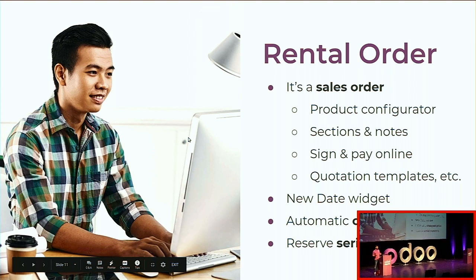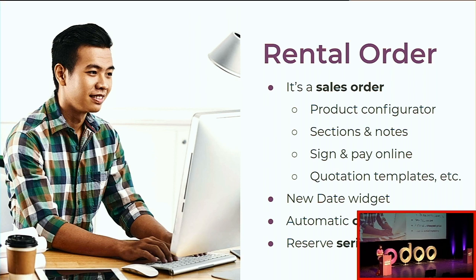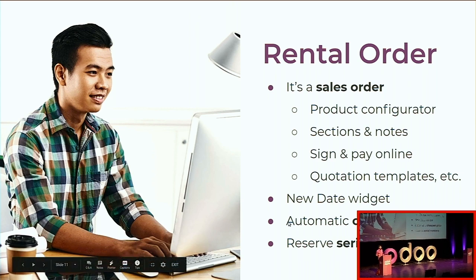The rental order is a sale order — that was a prerequisite for developing this application. We wanted to reuse everything already existing in Odoo. It's exactly the same sale order, with no extra fields. Even in version 13 we still have the product configurator, sections and notes, online sign and pay, and quotation templates. What's new is the new date widget, automatic cheapest price computation, and the ability to reserve with serial numbers if your products have specifications tied to them.